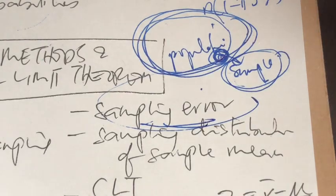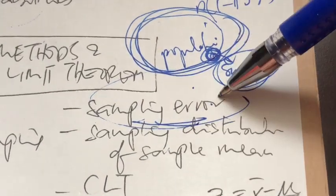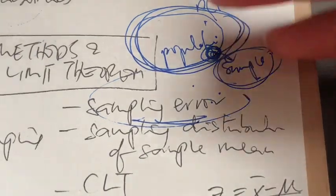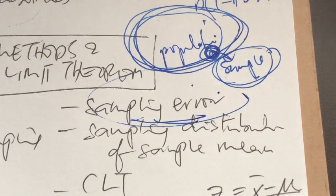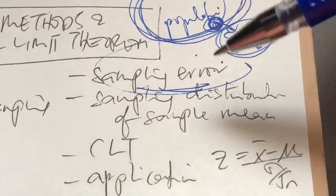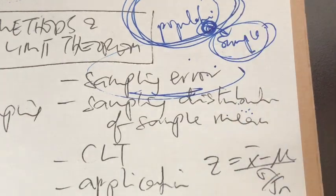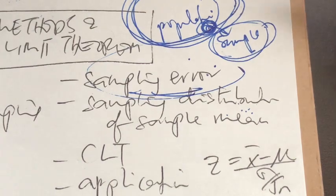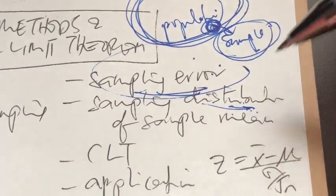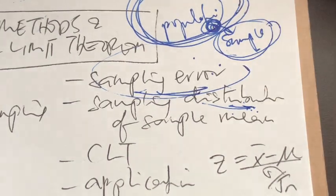Since there is sampling error, how can we make sure that our results are reliable? The easiest way is to come up with a sampling distribution of sample mean. This means it is as if we conduct the study multiple times — many, many times — so we can find a distribution or list of all the sample means we could have gotten if we repeated the study.